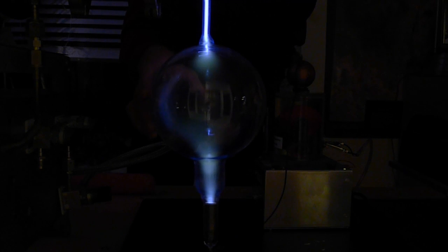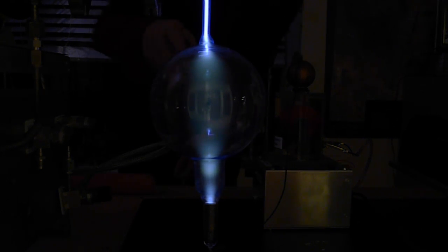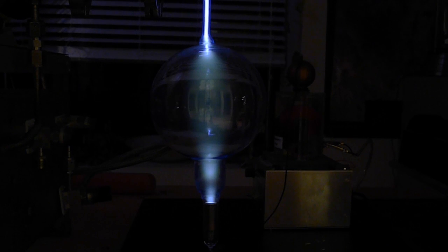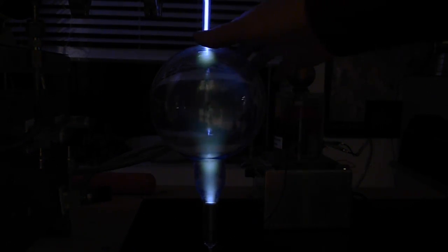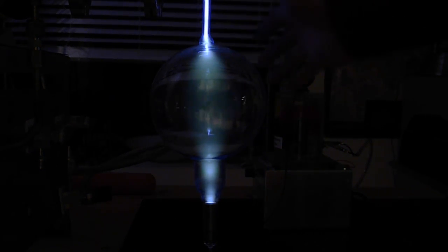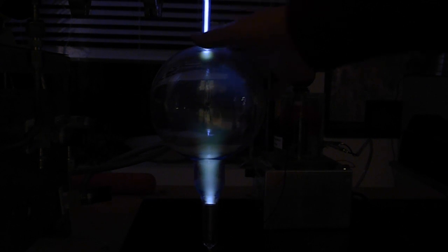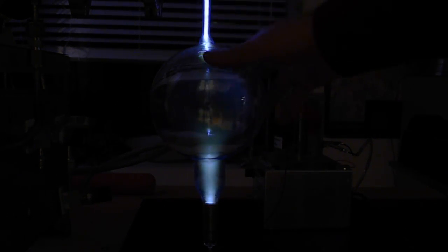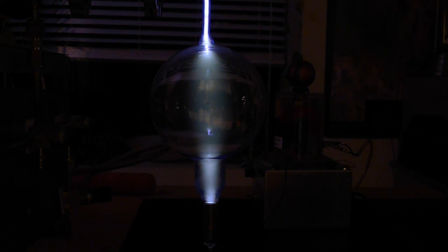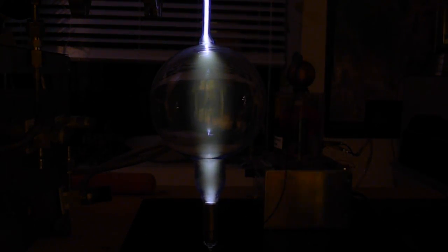We're going to go ahead and vent this gas out. You'll notice a green glow in here. This glow is the color that xenon makes at a very low pressure. We're probably at maybe, I don't know, half a torr or something right now. Xenon at half a torr gives you this nice greenish color.